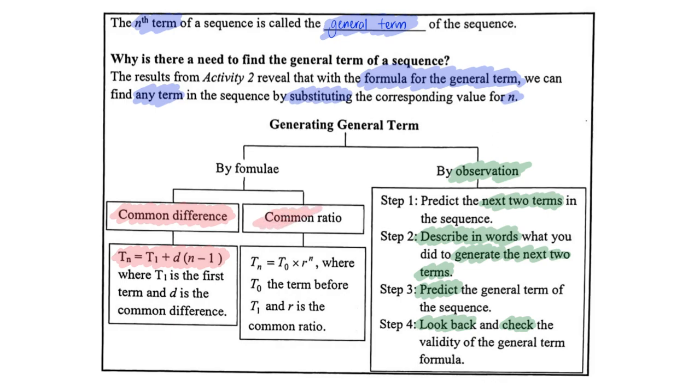And the other one, common ratio, this will be the formula. Where T_0 is the term before the first term. Where we substitute n as 0.